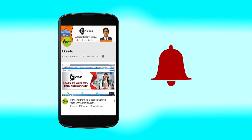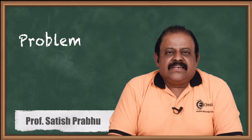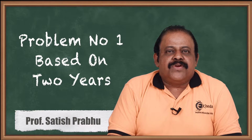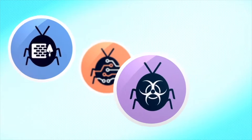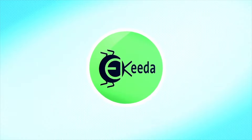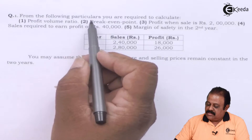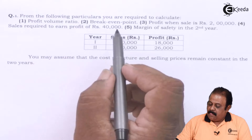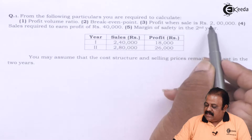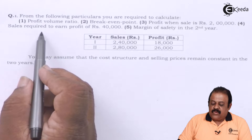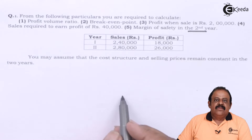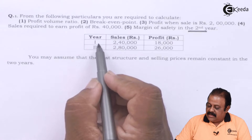Click the bell icon to get the latest videos from Ikida. Hello friends, today we'll be discussing a question on marginal costing where we have information of two different years. We are required to calculate the profit volume ratio (PV ratio), break-even point, profit when sale is ₹2 lakhs, sales required to earn profit of ₹40,000, and margin of safety in the second year.